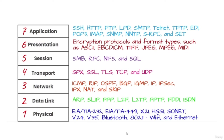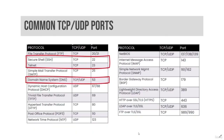Active FTP uses a data connection where data is transferred that originates from TCP port 20. DNS is the domain name system, a distributed global database that translates names to IP addresses, and vice versa.